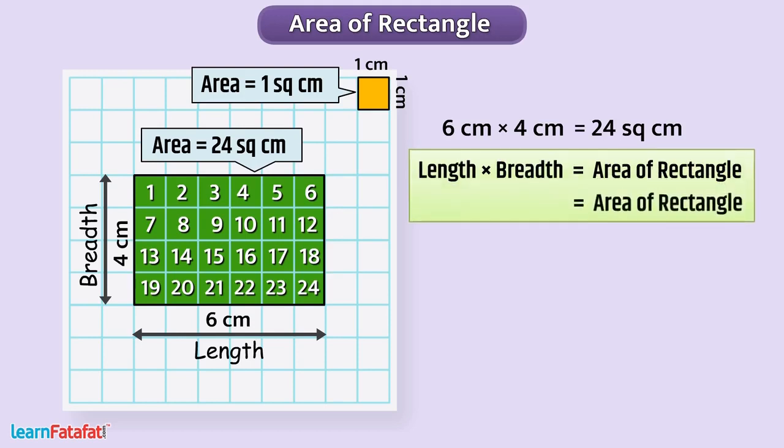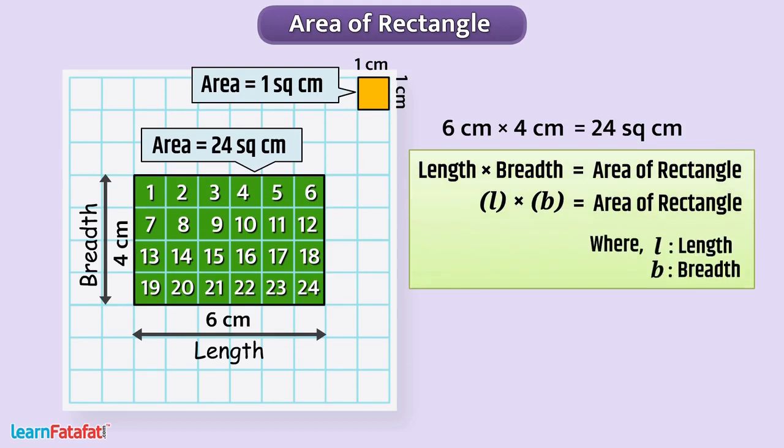So, simply, L multiplied by B, where L is the length of rectangle and B is the breadth of the rectangle.